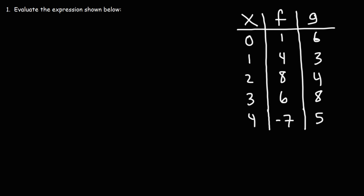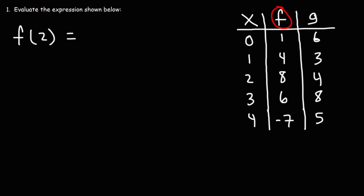In this video, we're going to talk about composite functions and inverse functions combined. So let's start with the basics. Using the data table on the right side, evaluate this expression: what is the value of f of 2? If we look at the function f and the x value 2, it gives us a value of 8. So f of 2 is equal to 8.